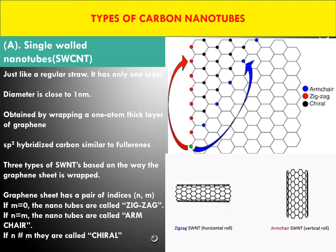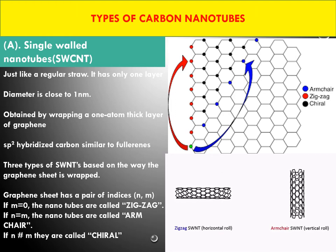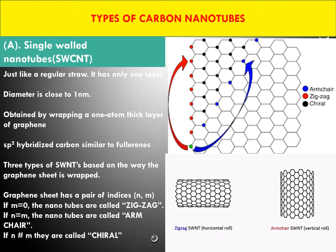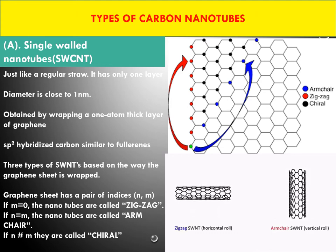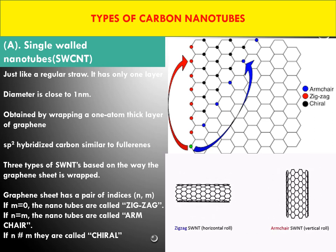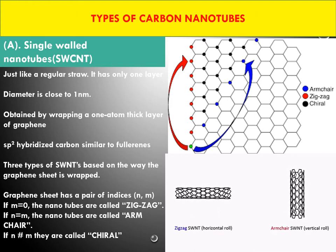Based on the type of wrapping, single-wall carbon nanotubes are again classified into three types according to their Miller indices (n and m). Based on the nature of these Miller indices, they are classified into zigzag, armchair, and chiral.